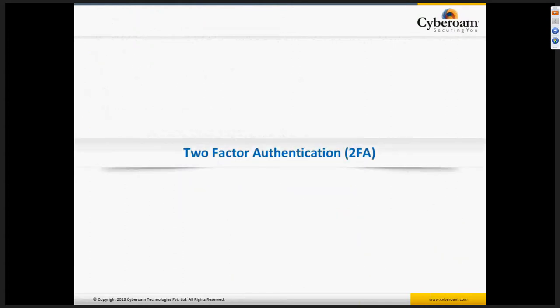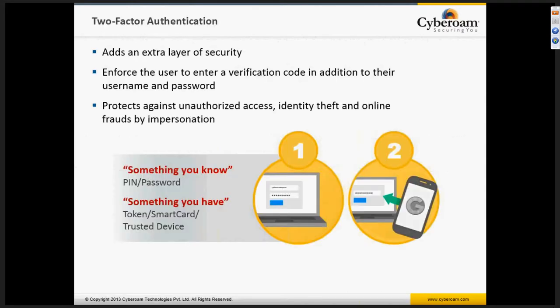So let us understand what is two-factor authentication. Two-factor authentication adds an extra layer of security. It enforces the user to enter a verification code in addition to their username and password. It also protects against unauthorized access, identity theft, and online frauds by impersonation. Two-factor authentication is based on something you know — a PIN or password — and something you have — a token, smart card, or trusted device. The combination of these two makes it very difficult to guess or lose passwords over the internet.